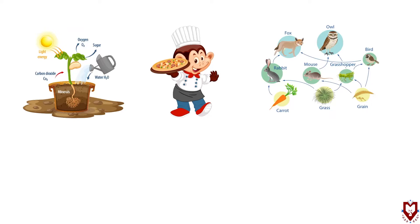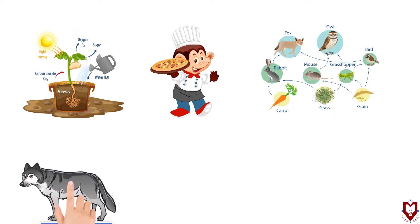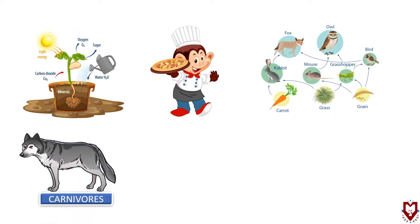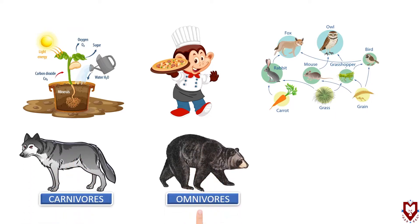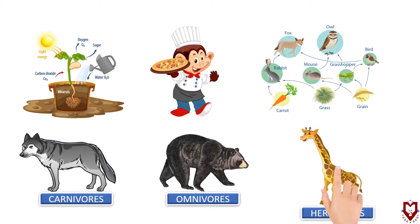When animals eat different types of food, they can be divided into three types. On the basis of their feeding habits, animals are divided into three main groups: they are carnivores, omnivores, and herbivores.